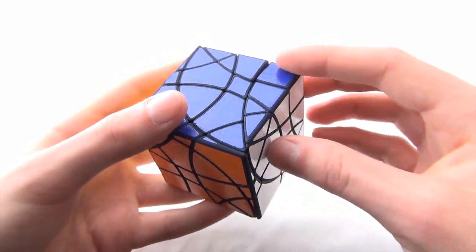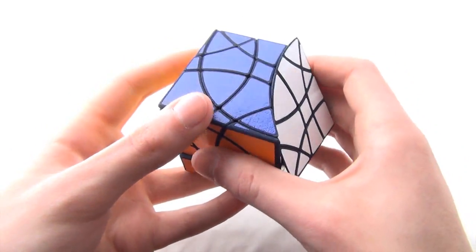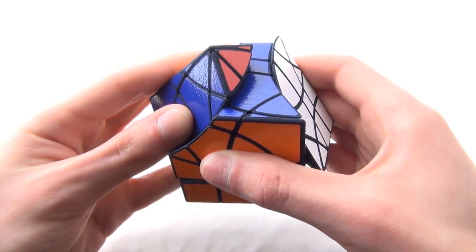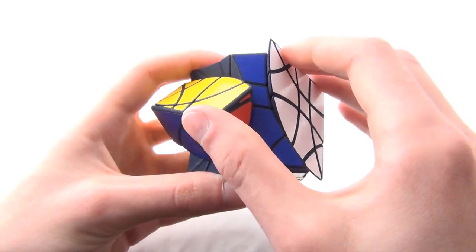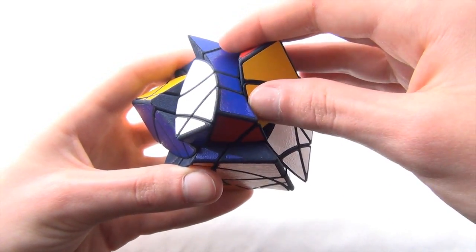And as an example of this, if I turn this layer like this, and this layer like this, I can now turn this layer in the middle. So, this is a jumbling move.